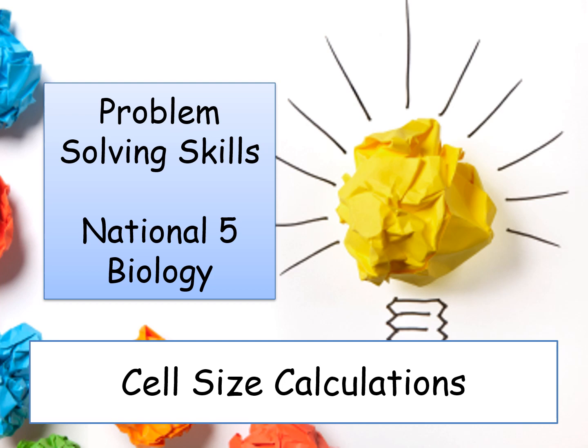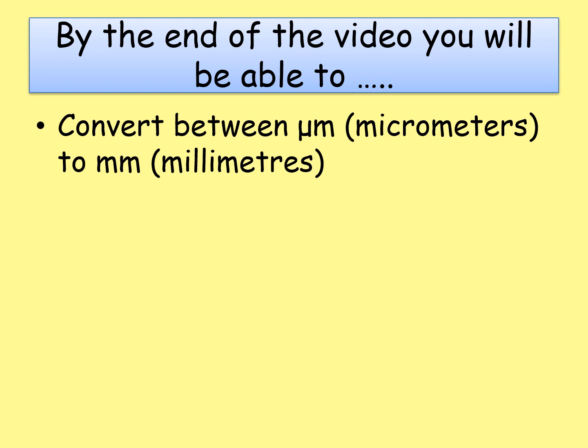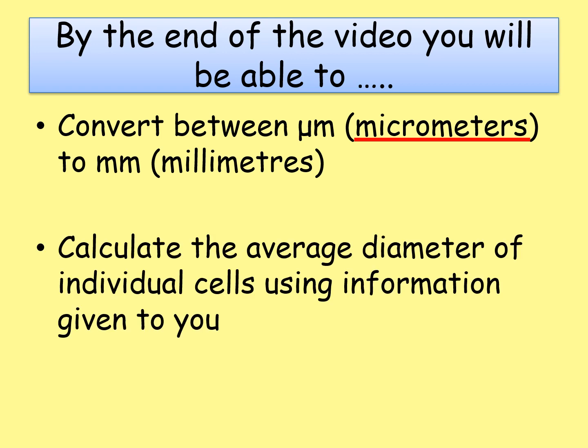Welcome to Problem Solving Skills for National 5 Biology. This video is going to focus on cell size calculations. I'm going to cover two skills: the first is being able to convert between micrometres and millimetres. Micrometres can be represented by the symbol µm or written in full as micrometres. The SQA usually writes it out in full so don't worry about that symbol. The second skill is calculating the average diameter of individual cells, and I'll tell you which pieces of information you need to pull out of the question to get the correct answer.